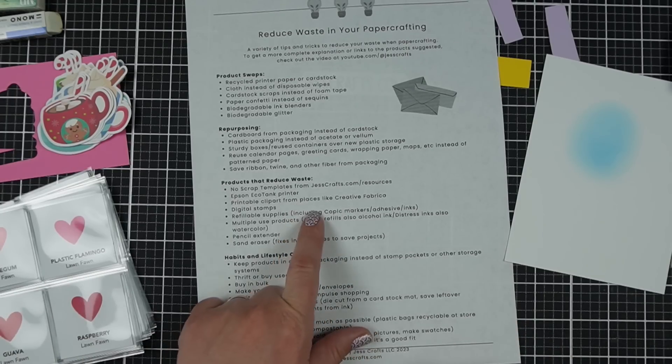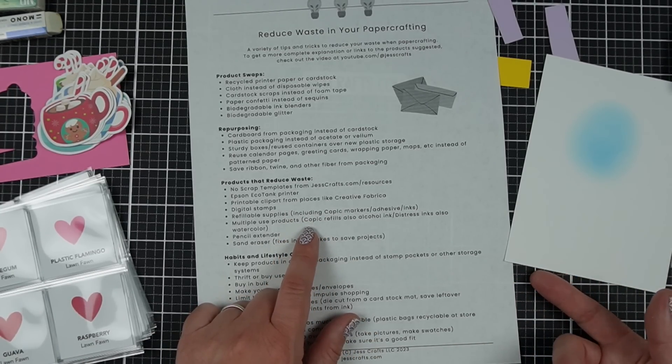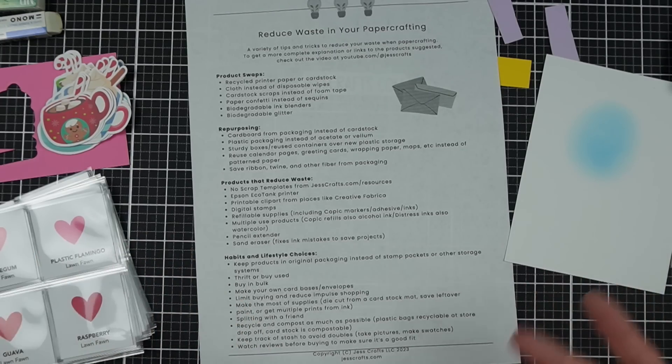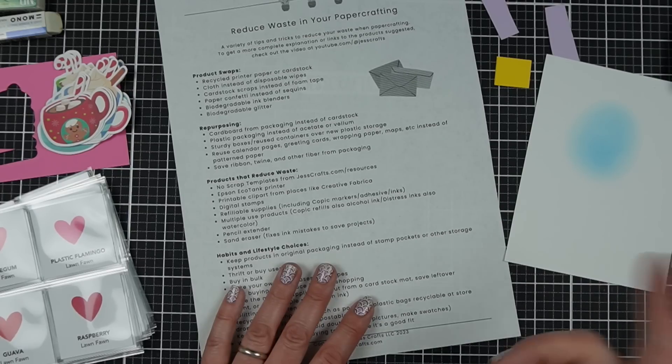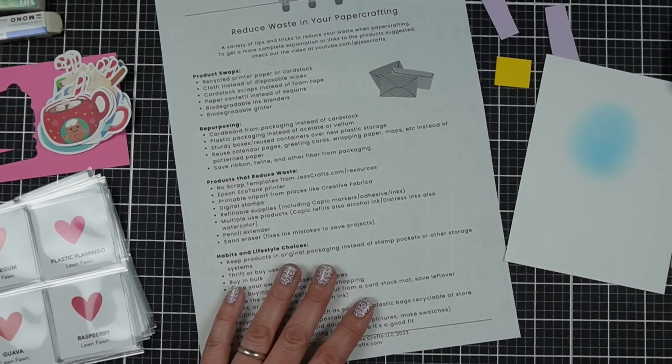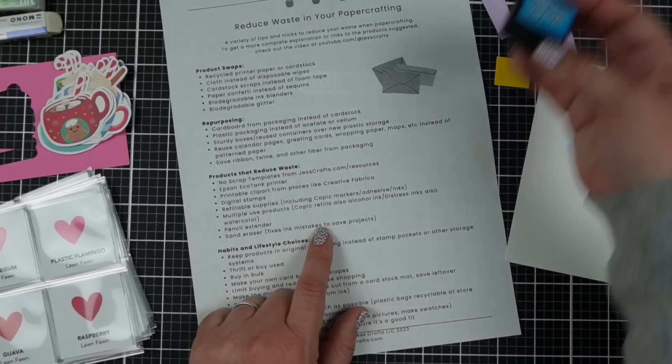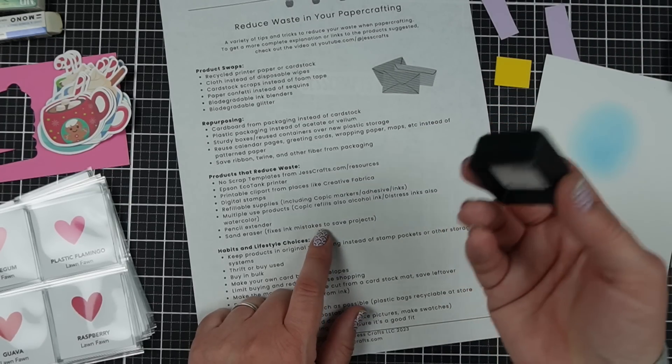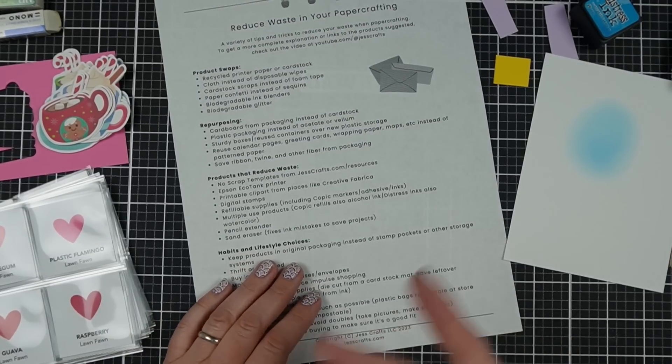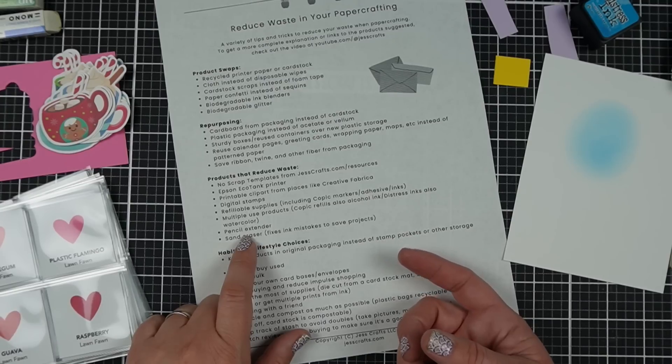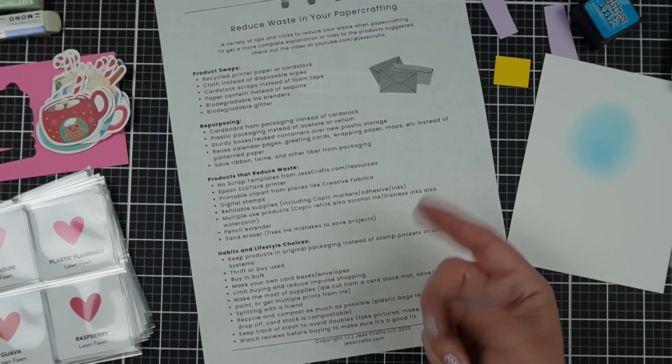Multiple used products. Copic refills can be used the same way that like Tim Holtz alcohol ink can be used. So I don't have to have both. I happen to have both because I got a really good sale on them. And that's another thing. Careful of those sales because you'll buy things you don't need. But at the time I didn't have a lot of Copic refills. And so another thing is like distress inks. These also work for watercolors. So if you don't watercolor much and you have distress inks, it'll probably do the trick. If you like to use colored pencils, watercolor pencil, a pencil extender can help.